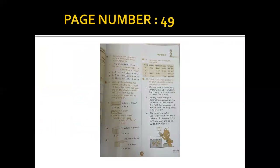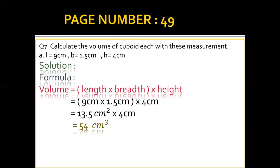Question 7: calculate the volume of the cuboid with these measurements. L = 9 cm, B = 1.5 cm, H = 4 cm. The formula is length × breadth × height. We put the values: 9 cm × 1.5 × 4. After calculating, the answer is 54 cm³.